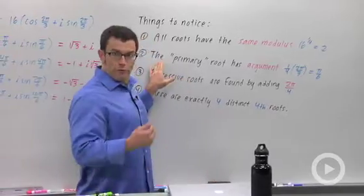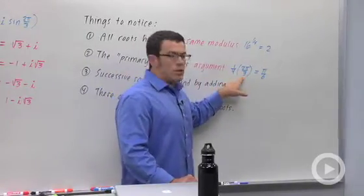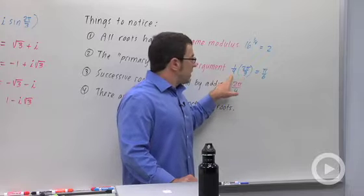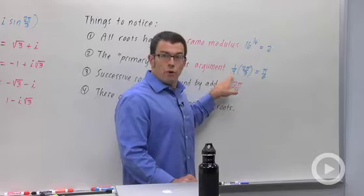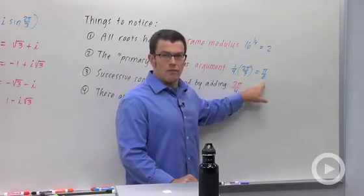The primary root, or the first root, is going to have argument, whatever the original argument was, divided by the degree of the root. So if you want the fourth root, you take 1 fourth of the original argument. In this case, we got pi over 6.